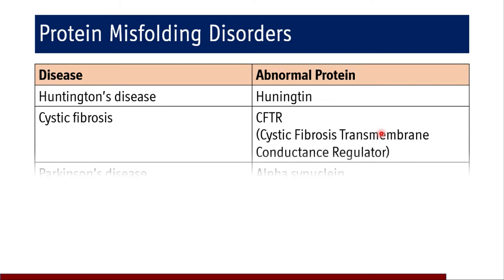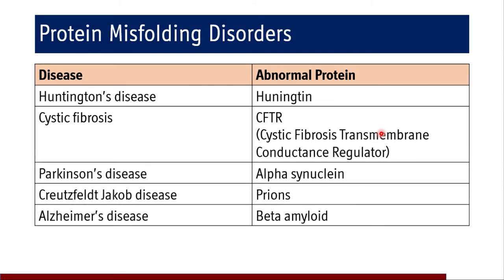Other protein misfolding disorders include Huntington's disease, which is due to abnormally folded huntingtin protein; cystic fibrosis, due to mutation of the CFTR gene (cystic fibrosis transmembrane conductance regulator); Parkinson's disease, due to alpha-synuclein protein; Creutzfeldt-Jakob disease, due to prions — which are infectious proteins; and Alzheimer's disease, due to deposition of beta-amyloid protein.